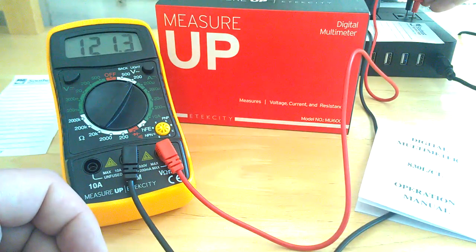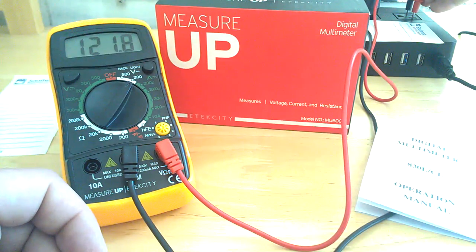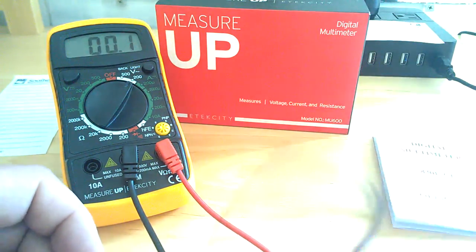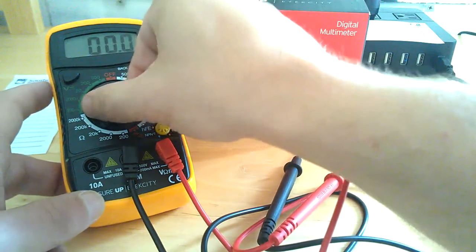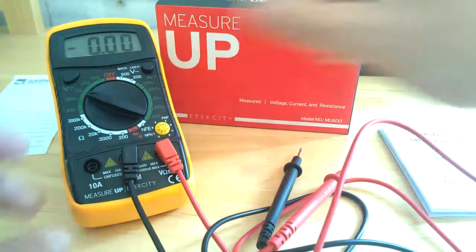As you can see on my screen, it's putting out 121 volts, so that works great. Now over here is your DC range.